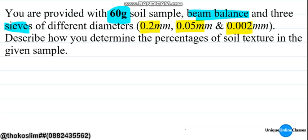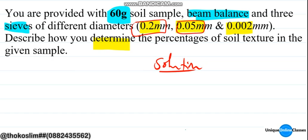Now I am going to describe how you determine the percentage of soil texture in the given sample. I am going to arrange the sieves starting from the top, arranging them in order.